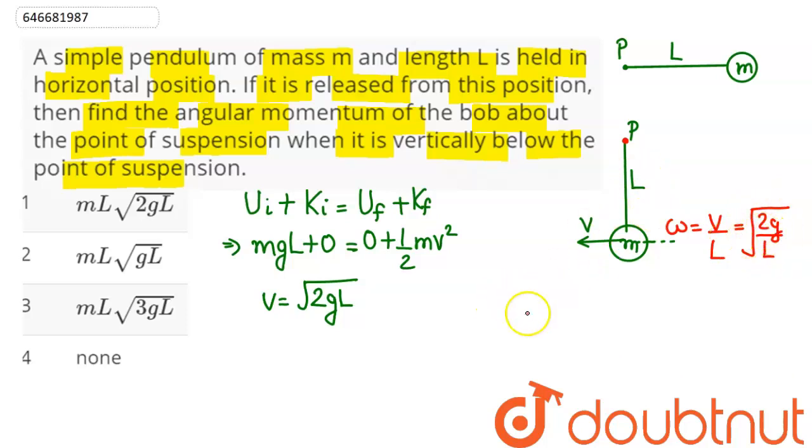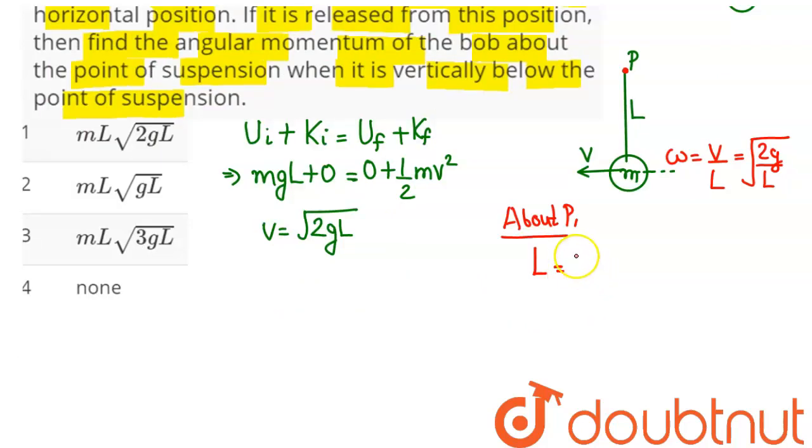So the angular momentum about P, we have angular momentum of the system as I omega. Now I here is mL square and omega value we have obtained as root under 2g upon L.